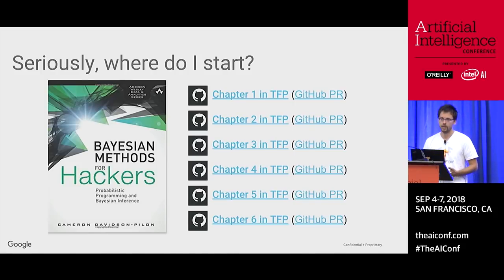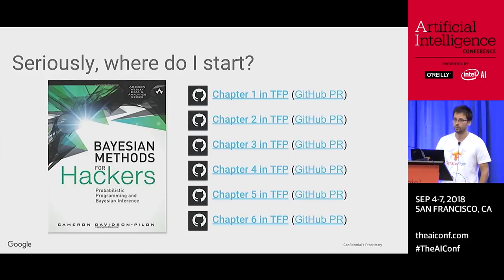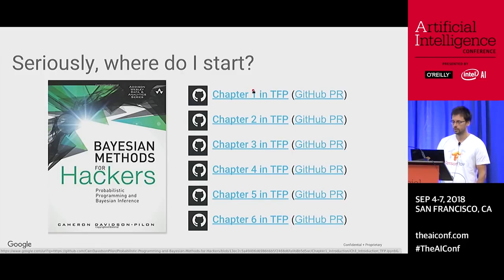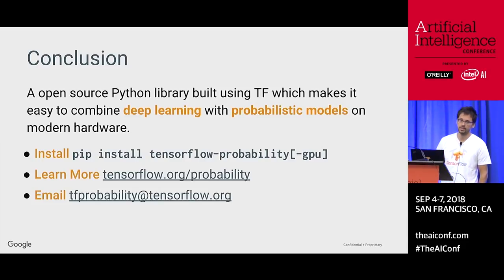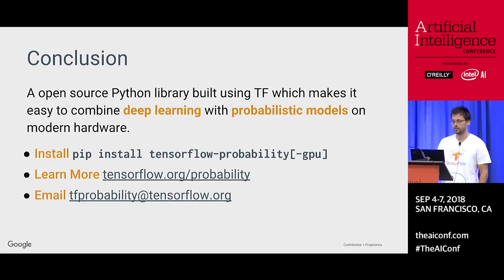That was a lot of information we breezed through quickly. We are in the process of rewriting the Bayesian Methods for Hackers book using TensorFlow Probability — there's already a PyMC version. We've started all the chapters; one and two are in the best shape, so definitely start with those. Chapter one has the text message example. In conclusion, TensorFlow Probability helps you combine deep learning with probabilistic modeling so you can encode additional domain knowledge. It's pip-installable and easy to use — check it out as part of the TensorFlow ecosystem.